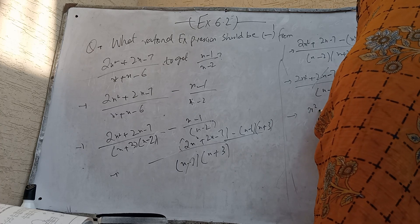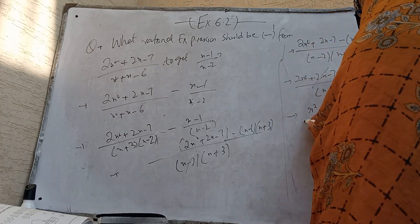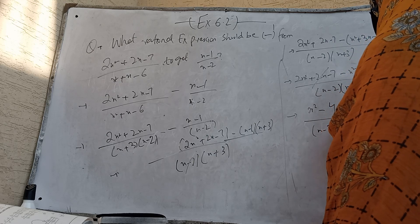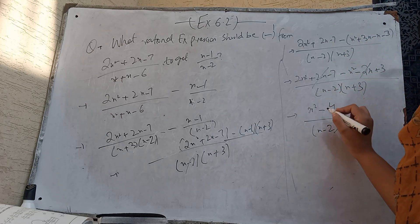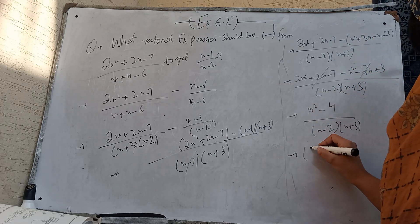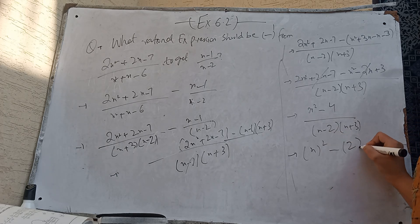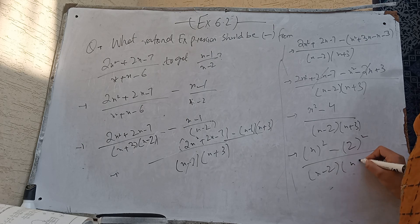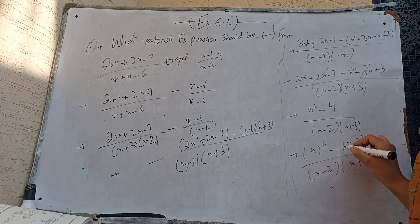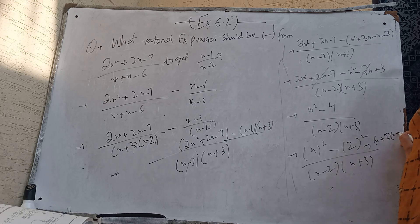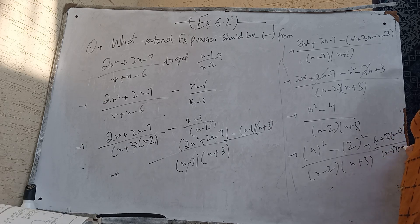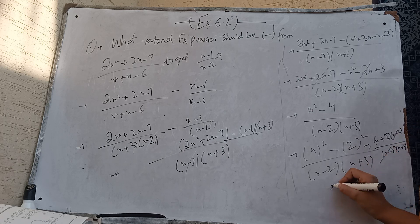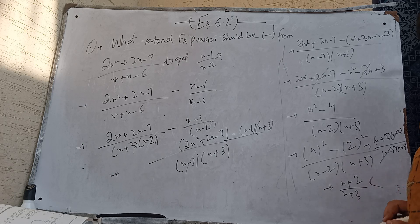So combining: x squared, and negative 7 plus 3 which equals negative 4, over (x minus 2)(x plus 3). Using the a squared minus b squared formula, which factors as (x plus 2)(x minus 2) over (x minus 2)(x plus 3). The (x minus 2) terms cancel out. The required answer is (x plus 2) over (x plus 3).